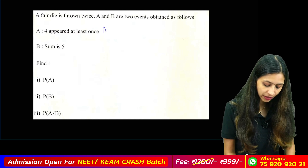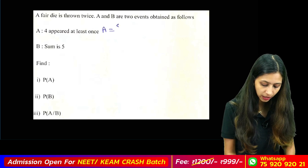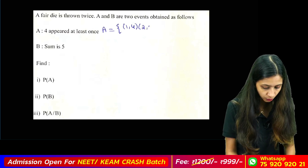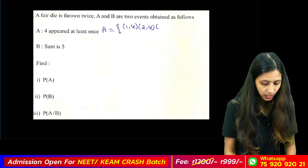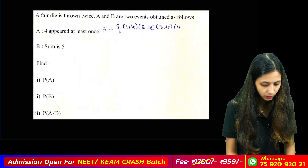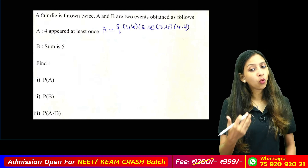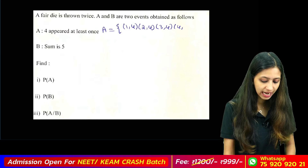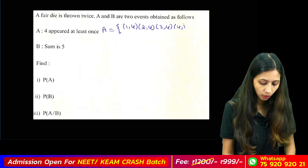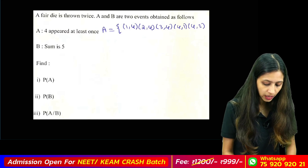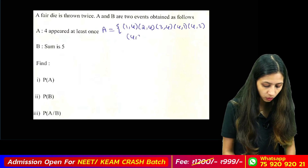In which event do we have 4 appearing? The cases are: 1,4 — 2,4 — 3,4 — 4,4. Also remember: 4,1 — 4,2 — 4,3 — and 4,4. So at least we have these cases where 4 appears.